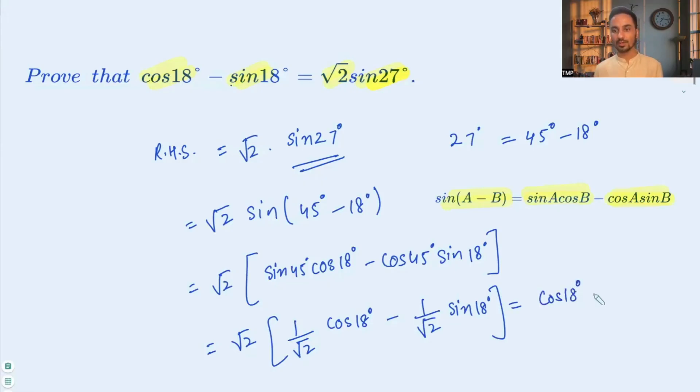So you will be left with cos 18 degrees minus sin 18 degrees, and that is equal to the left hand side. I hope you will find this video helpful and I'll see you in the next one.